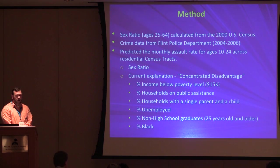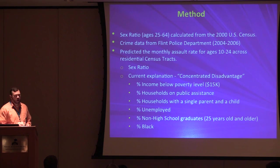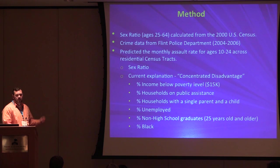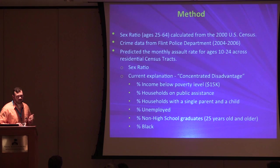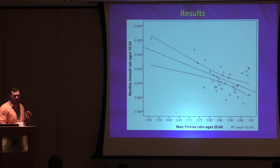We calculated the sex ratio in census tracts from the 2000 census, then used crime data from the Flint Police Department from half a decade later, and predicted the monthly assault rate for ages 10 to 24 across residential census tracts. We geocoded our data and compared the effects of the sex ratio against concentrated disadvantage — formerly known as poverty — as the predominant explanation for adverse public health outcomes.